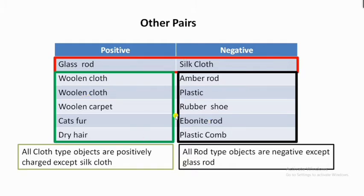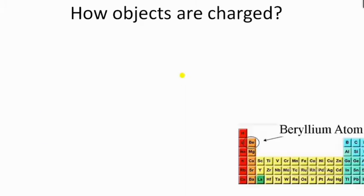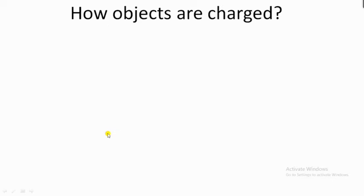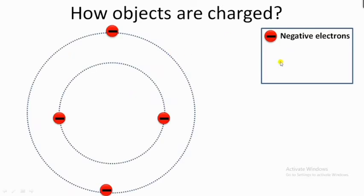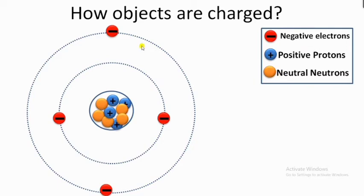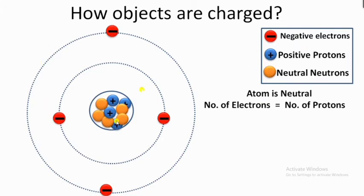Now let's understand how objects get charged. Take the example of a beryllium atom. From junior classes we know atoms are made of electrons, protons, and neutrons. In beryllium, there are four negatively charged electrons, four positively charged protons, and five neutral neutrons. Since the number of electrons and protons are equal, the atom is neutral — it is not charged.